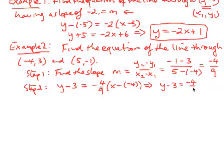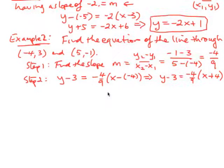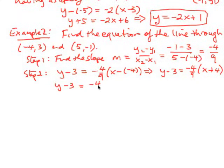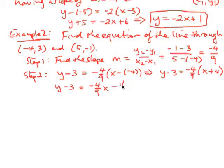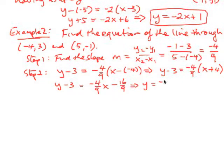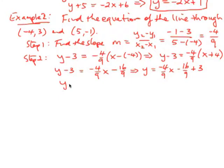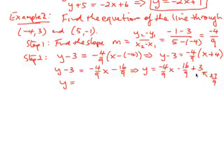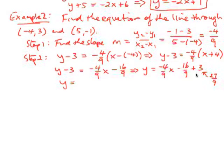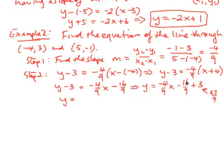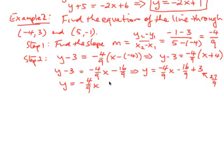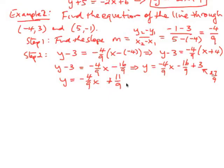So this implies y minus 3 equals negative 4/9 times (x plus 4). Distributing, we get y minus 3 equals negative 4/9 x minus 16/9. Adding 3 — which equals 27/9 — to both sides, we get 27/9 minus 16/9 equals 11/9. Therefore the equation is y equals negative 4/9 x plus 11/9.